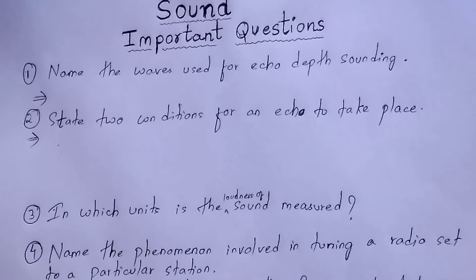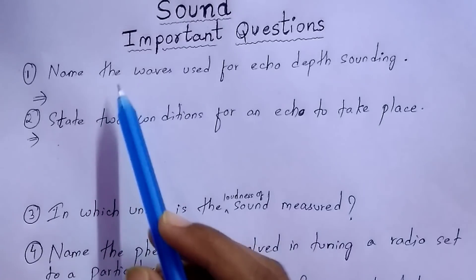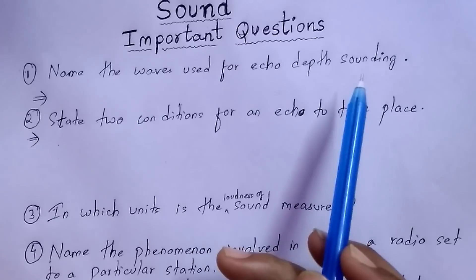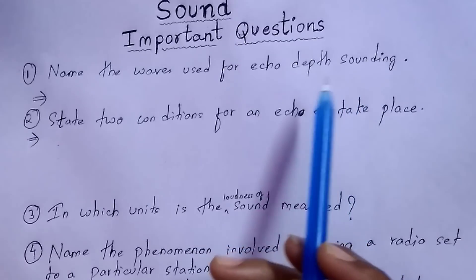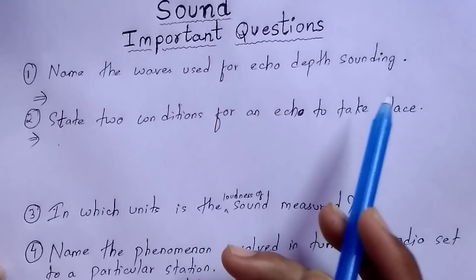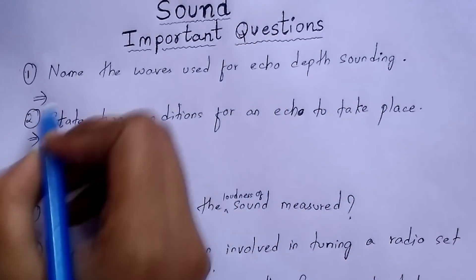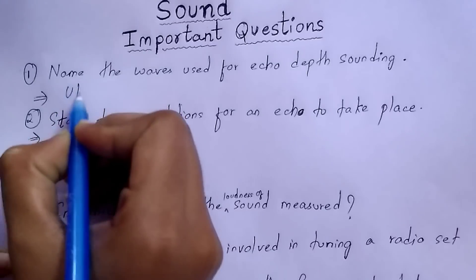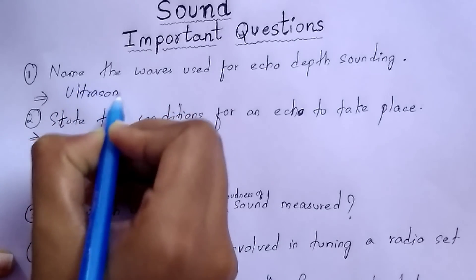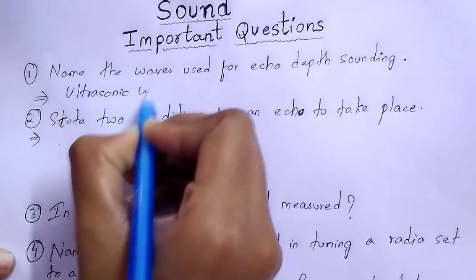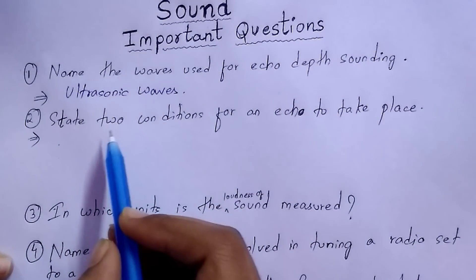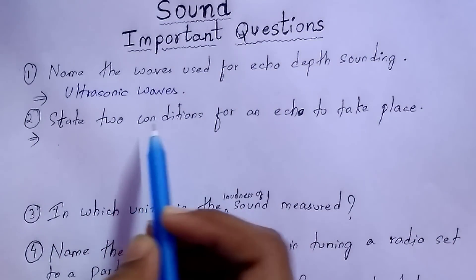Let us begin. The first question: name the waves which are used for echo depth sounding. The waves used for echo depth sounding are ultrasonic waves.